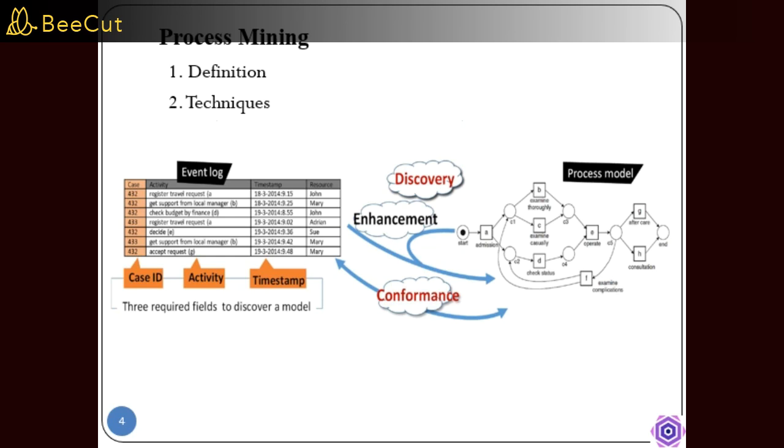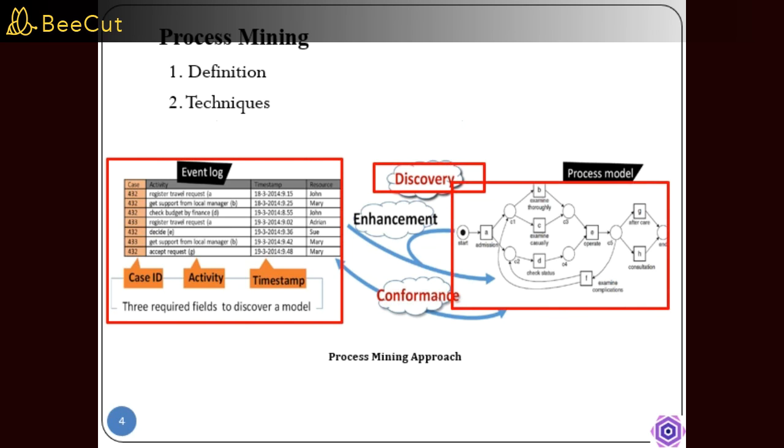Basically its techniques are: Discovery takes an event log and produces a model. Conformance checking compares the existing model to event logs of the same model and checks if it is corresponding to reality as recorded in the event log.